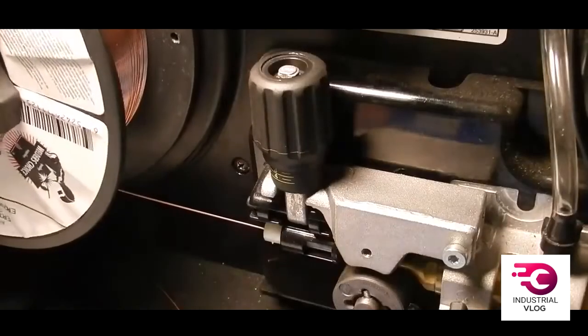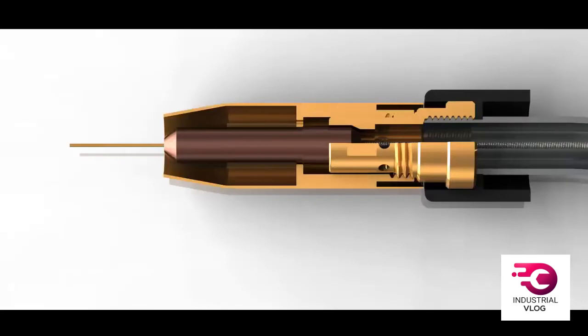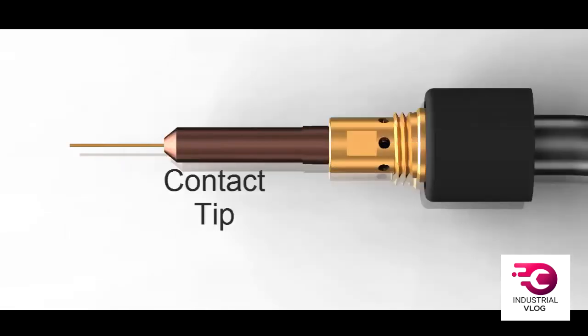Here's the MIG wire going through the wire feeder into a flexible tube or conduit liner. The liner goes through the hose or welding lead all the way to the torch nozzle. At the nozzle, the wire is fed through a contact tip and comes out at the point of the weld.